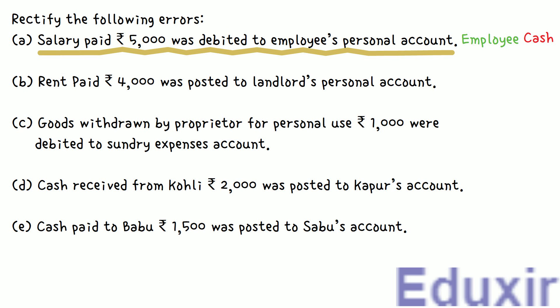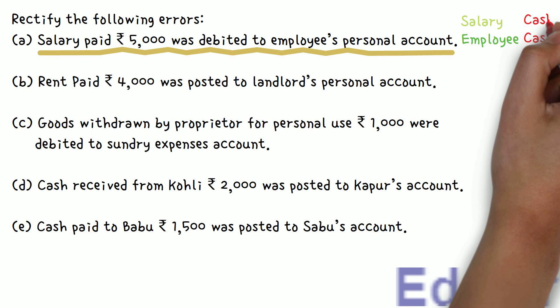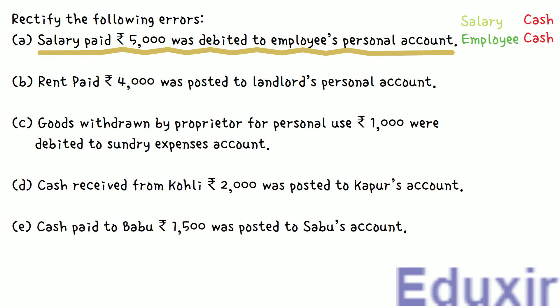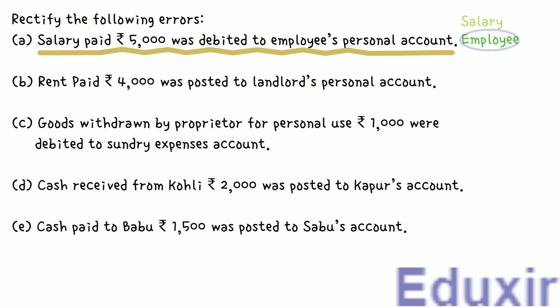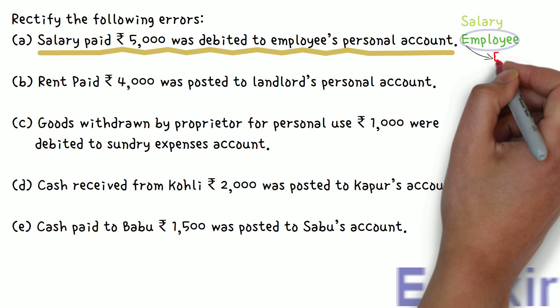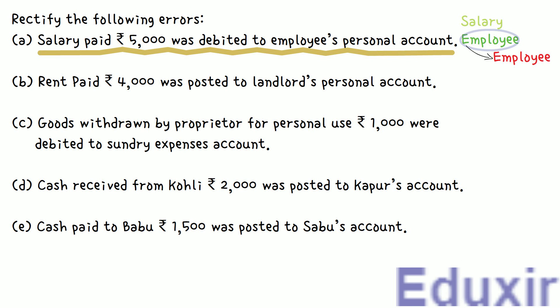The correct entry should have been to debit the salary account, as salary is an expense, and to credit the cash account, as payment was done in cash. The cash account is credited correctly even in the erroneous recording, so we leave it aside. The error is with debiting the employee's personal account. To rectify this, we reverse it by crediting the employee account. The rectification entry: debit Salary Account Rs. 5,000, credit Employee Account Rs. 5,000.